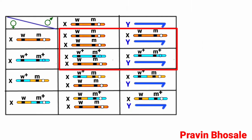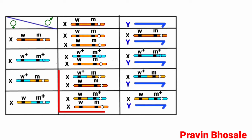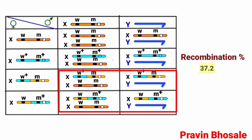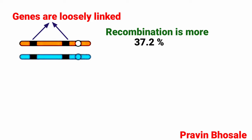You can see the parental combination is 62.8% — that is 1,028 out of 1,628. The recombination percentage is 37.2% — that is 1,372 out of the total. So when genes are loosely linked, recombination is more.